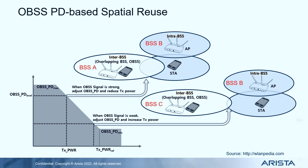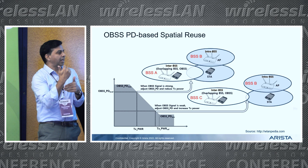Consider two BSS, BSS A and BSS B, which are fairly close — meaning that when BSS A transmits, its signal will be heard very loudly at BSS B. If a node in BSS B detects a transmission happening in BSS A, it looks at the received RSSI and compares it against a threshold called the OBSS PD level. If the received signal power is less than the OBSS PD level, then a parallel transmission can originate from BSS B. However, there is a cost: you must reduce the power of the secondary transmission so that the original transmission can be decoded reliably at its receiver.